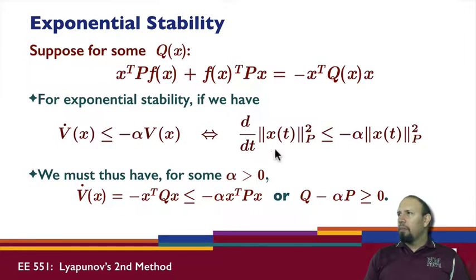So V dot of x, we saw, is given by this expression. Notice that these are both the same norms. In the quadratic stability case, this was just a regular Euclidean norm. Here, we have the same p norm in both terms. So this condition is equivalent to this condition, and for this condition to be true for all x, basically means that Q minus alpha P must be greater than or equal to zero. So instead of alpha I, I have alpha P. And so we have another condition that's very similar that can be used to establish exponential stability for a system. And again, this can hold for linear systems or nonlinear systems.